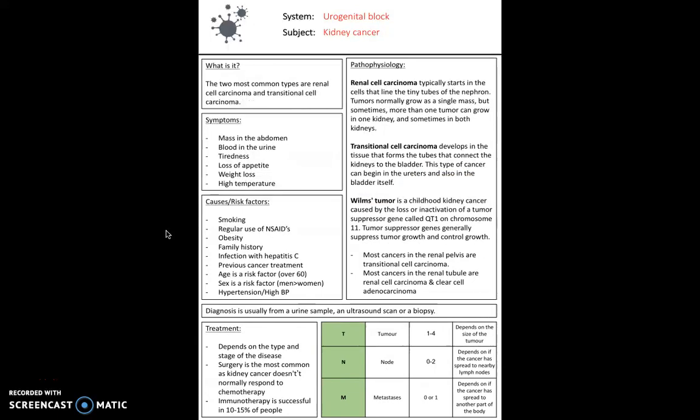Kidney cancer is another type we were taught about, and it's one of the most common types of cancer in the UK. The two most common types are renal cell carcinoma and transitional cell carcinoma. Risk factors are similar to bladder cancer - smoking, obesity, family history, regular use of NSAIDs. It has some unique ones: infection with hepatitis C can increase risk, and previous cancer treatment as well.